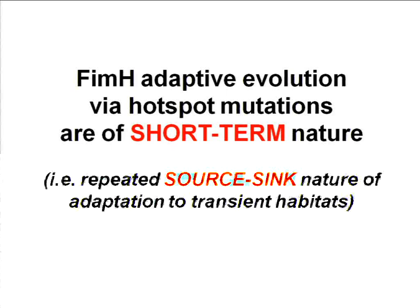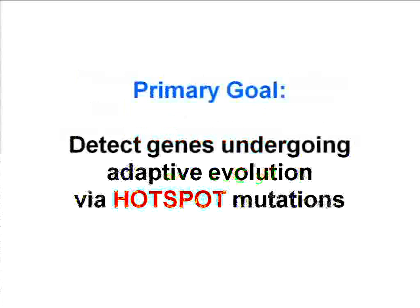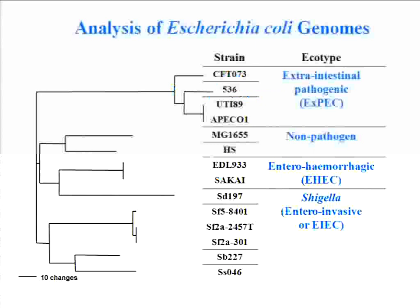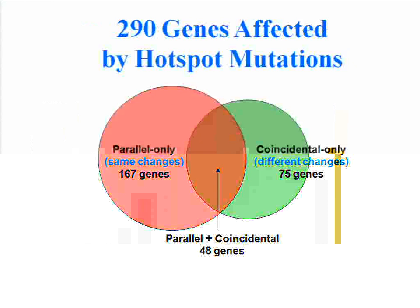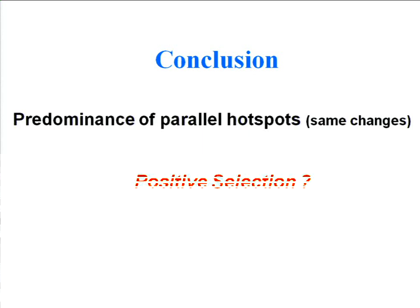So we went on to analyze other core genes in E. coli at a genome level to see if we find a similar pattern. The primary goal was to detect genes undergoing adaptive evolution through accumulation of hotspot mutations. For this, we used a 14-strain dataset of completely sequenced genomes isolated from four different ecotypes: extra-intestinal, non-pathogenic, enterohemorrhagic, and Shigella or entero-invasive E. coli. After constructing the orthologous gene dataset, we found about 300 core genes affected by hotspot mutations. Very interestingly, about 75% of these genes were affected by parallel hotspot mutations — showing a predominance of parallel hotspot mutations.